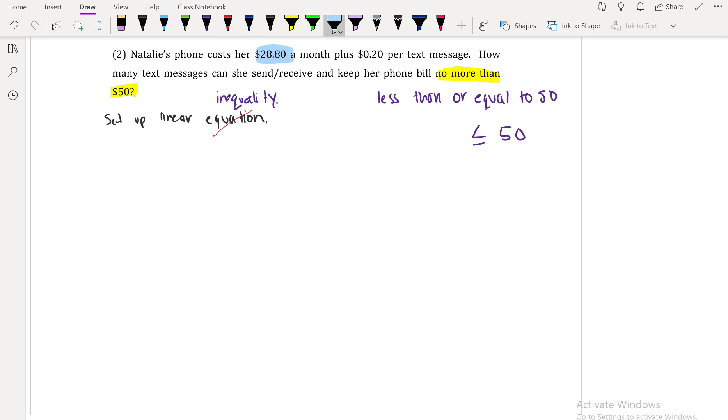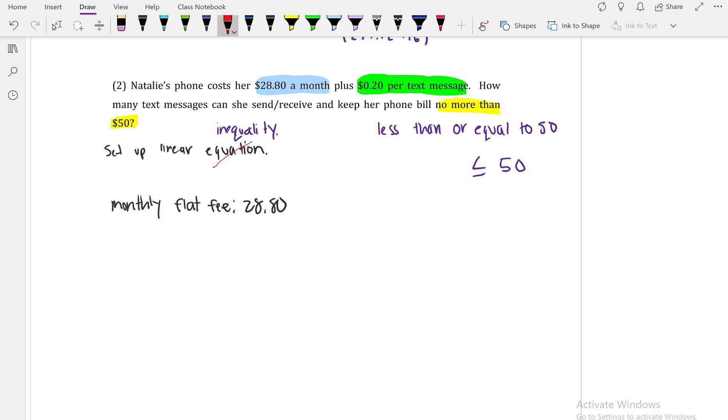So if that's the case, that represents less than or equal to $50. Now, what we also have is that it costs her $28.80 a month, no matter what. So that is going to be your monthly flat fee, $28.80. And here, that 20 cents per, that key word here is per. Per tells you that that's going to be your rate, which tells you that's going to be your slope. So here, your m, or your slope, is going to be $0.20. So really, you can think about a linear equation as y equals mx plus b, where m is your rate, and that b value is your flat rate.